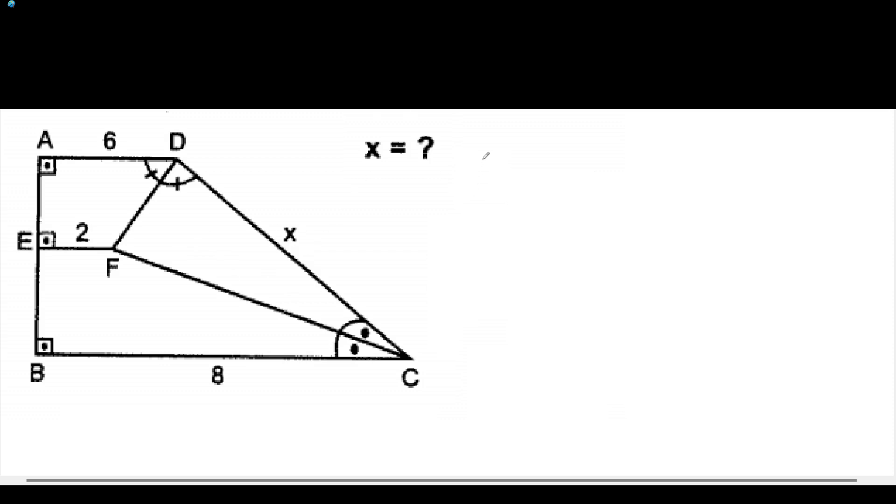We have to find out x here. The first way of solving this problem is to continue this line. So if we continue, we can see that each line will be parallel to the lines AD and BC, which means that if these two angles will be alpha and alpha, this angle will also be alpha.